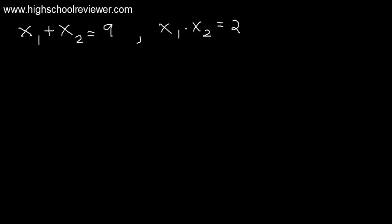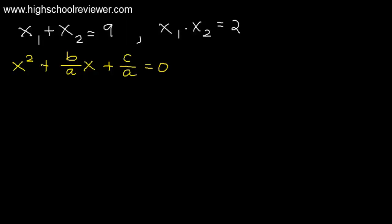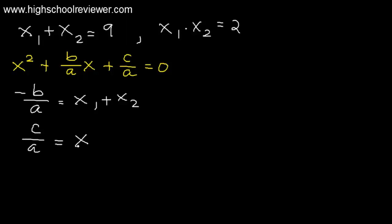One form of writing a quadratic equation is x squared plus b over a multiplied by x plus c over a equals 0. We know that negative b over a equals x sub 1 plus x sub 2, and c over a equals x sub 1 times x sub 2.